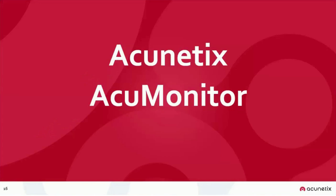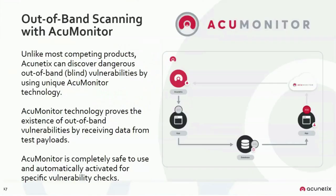With AcuMonitor — included in Acunetix and working in the background — it serves as an intermediate service to detect out-of-band vulnerabilities. Out-of-band vulnerabilities are those that do not provide a response to the scanner during testing. Vulnerabilities detected with AcuMonitor are never false positives. Examples of out-of-band vulnerabilities include blind XSS, out-of-band SQL injections, host header injections, and email header injections.